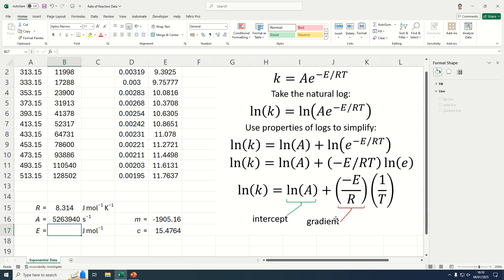We also know that the gradient, m, is equivalent to minus E divided by R. So if we take that gradient value and if we actually multiply that, so times minus R, because there's a negative in there as well.